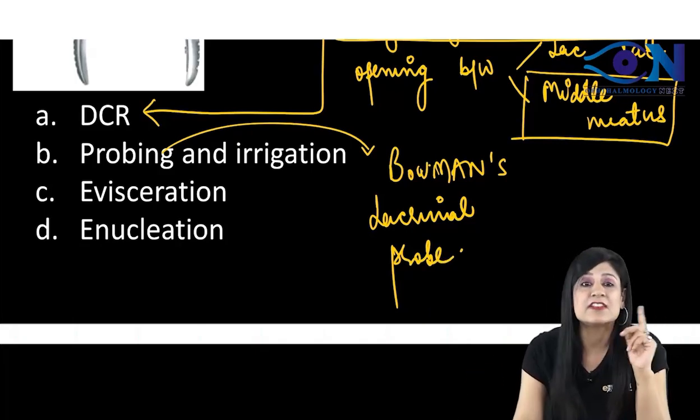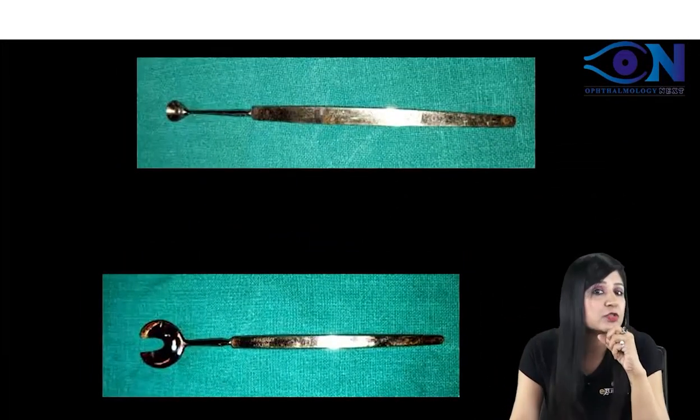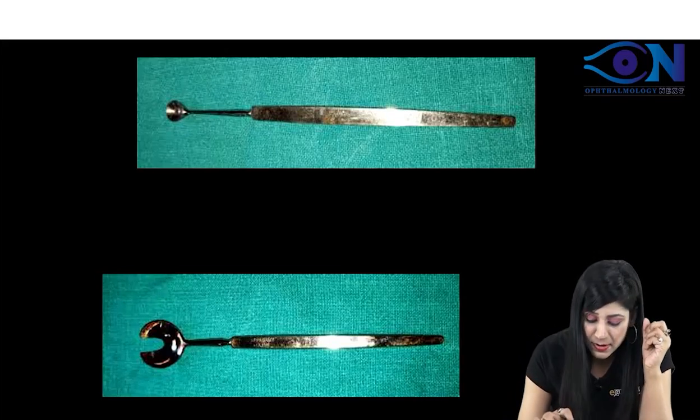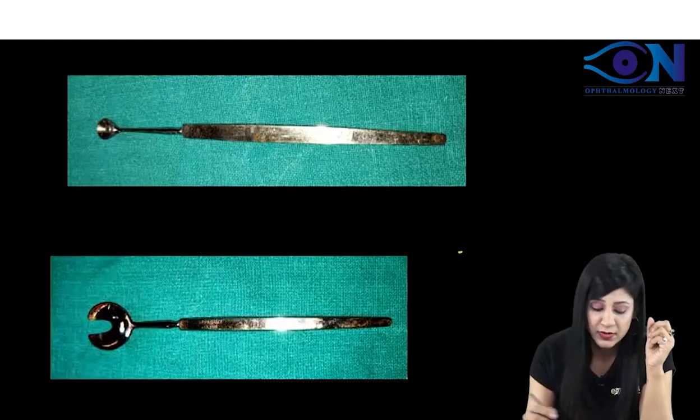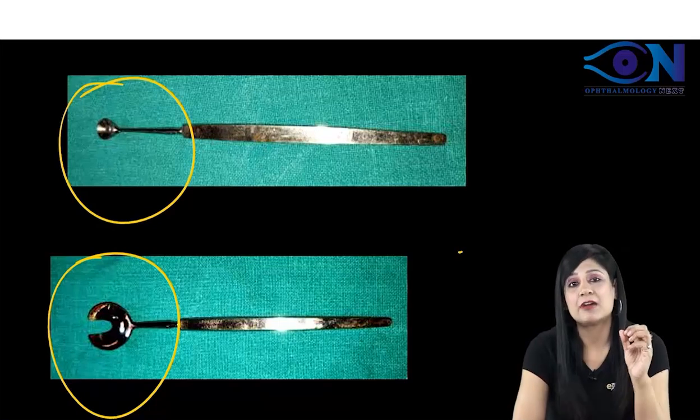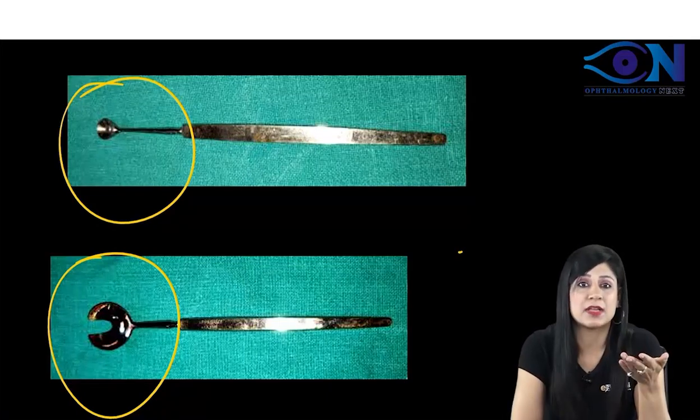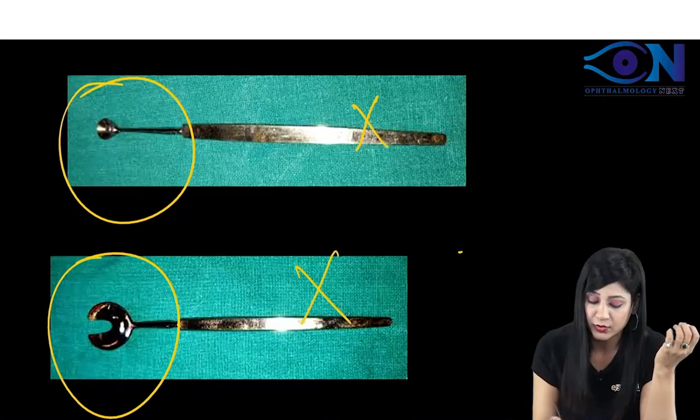What are the instruments used for evisceration and enucleation? Look at this. They must be looking very similar to you. But always remember that there is a slight difference between them. You can see the ends. One important thing is whenever you have to differentiate in the instruments, always look at their tip. You do not have to see the handles. Do not look at the handles.